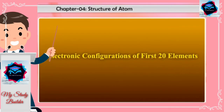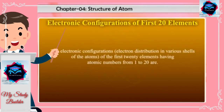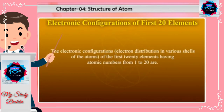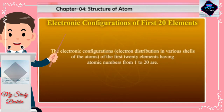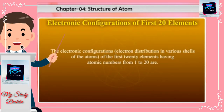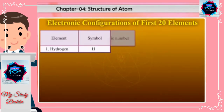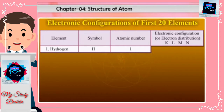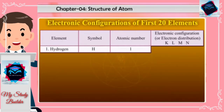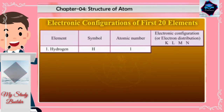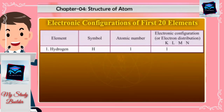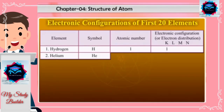Electronic configurations of first 20 elements. The electronic configurations or electron distribution in various shells of the atoms of the first 20 elements having atomic numbers from 1 to 20 are: Element Hydrogen, Symbol H, Atomic number 1, Electronic configuration K L M N is 1. Helium He, Atomic number 2, configuration 2.